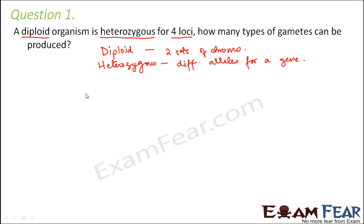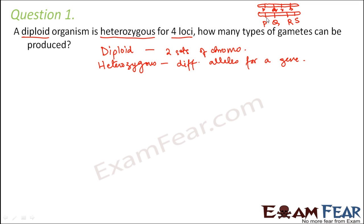Then it says for four loci. Locus is nothing but the position on the chromosome. So it is trying to say that it has four different genes or four different locations on the same chromosome for four traits, and they are all heterozygous. That means if the genes on one chromosome are P, Q, R, S, then their corresponding genes on the homologous chromosome are going to be small p, small q, small r, and small s — because this is heterozygous. And why do we have two pairs? Because it is diploid, so it has two sets of chromosomes.